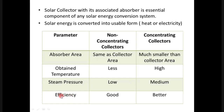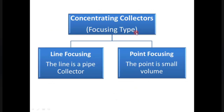Talking about efficiency: non-concentrating collectors have good efficiency, but concentrating collectors have better efficiency than non-concentrating collectors. Concentrating collectors — focusing type — are of two types: line focusing and point focusing. In line focusing, the focal region is a pipe or line. In point focusing, the focal region is a small volume or point.